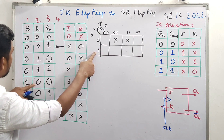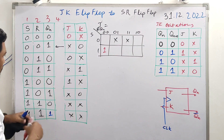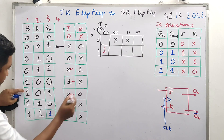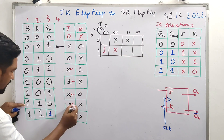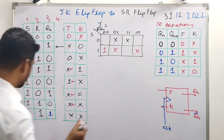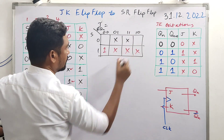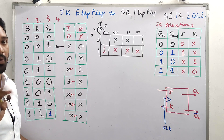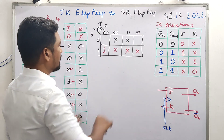Continuing to fill the K-map for J: some cells get 1, some get don't care. Here we have 1, and don't care is placed. Going through combinations: 1,0,1 gives don't care; 1,1,0 gives don't care; 1,1,1 is filled. All values are now plugged into the K-map for J.